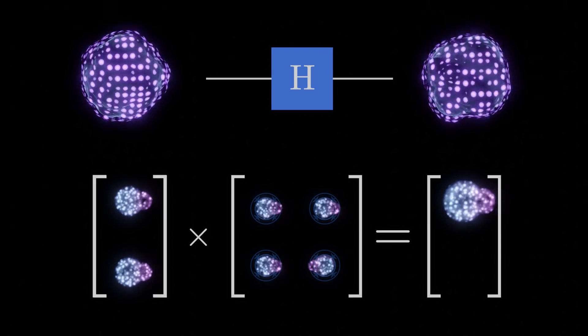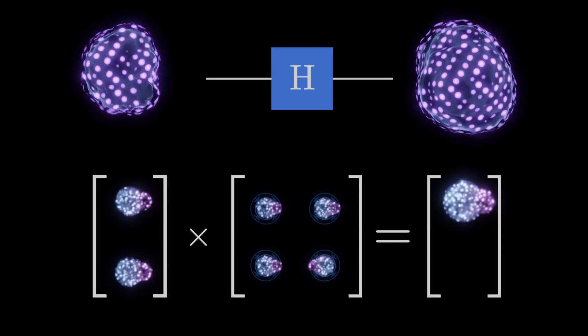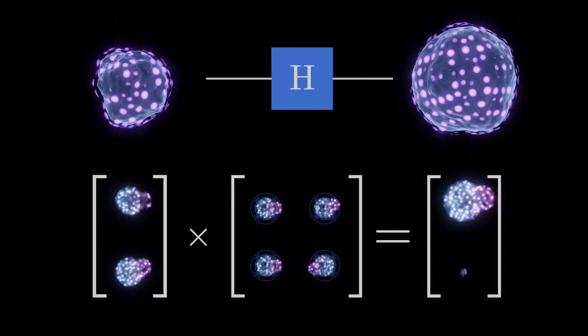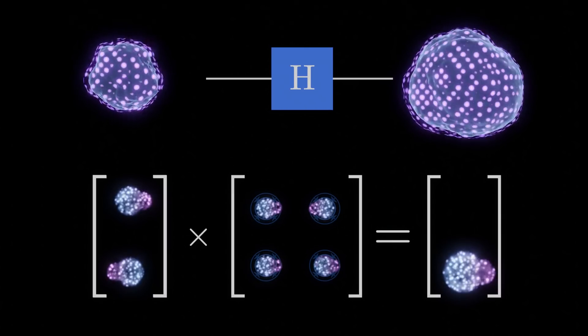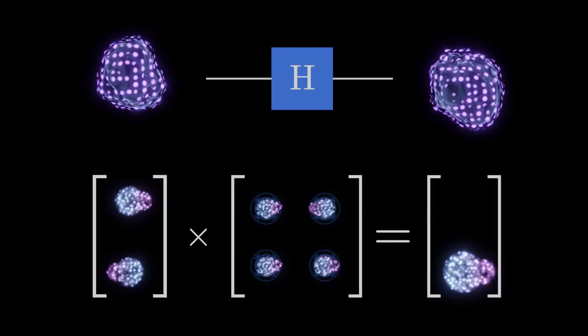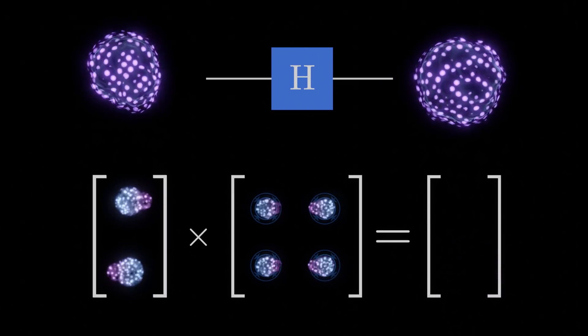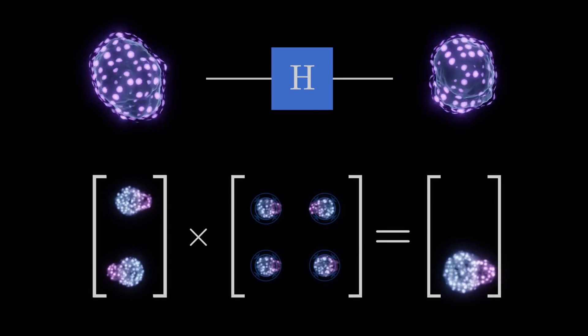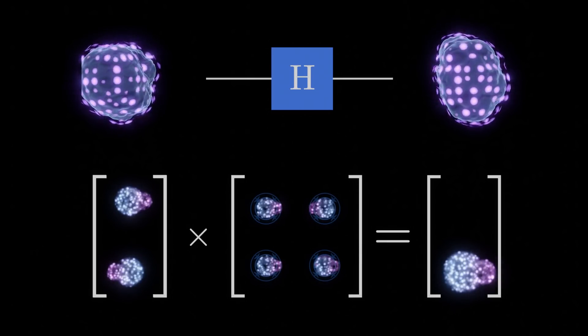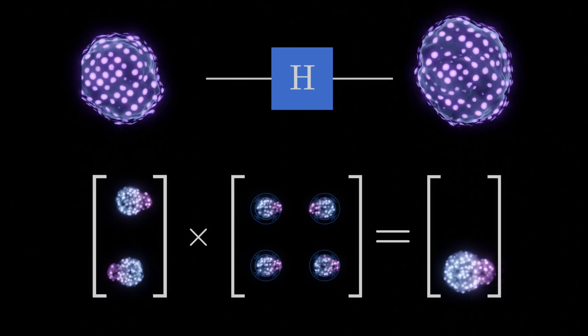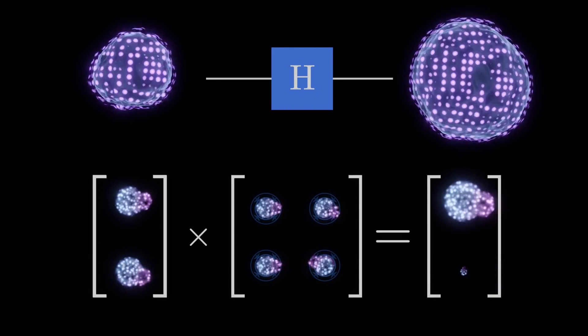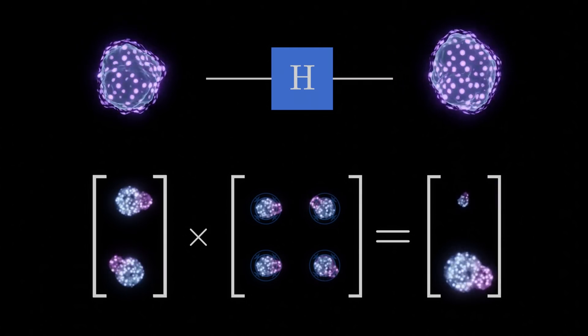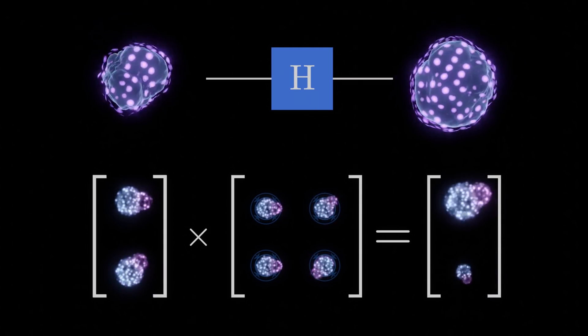Stranger still, if we take a qubit where either state is equally likely, but the phase of each amplitude are exactly opposite, applying the Hadamard gate will cause it to be likely observed in the 1 state. Notice how the phase rotation makes this distinction possible. Also notice how this behavior is the kind of thing we can observe in the real world that tells us that complex numbers are necessary to describe quantum systems. Even though we cannot directly measure the phases, we can still infer their existence by how they affect the magnitudes.